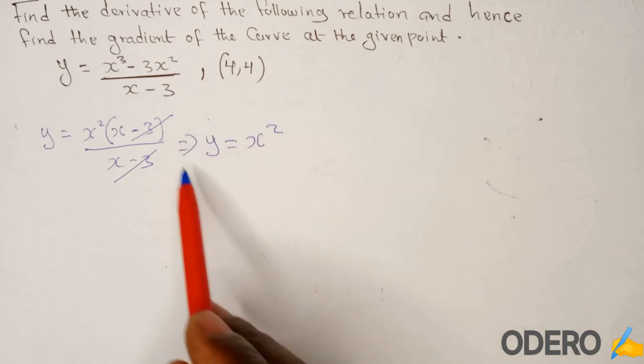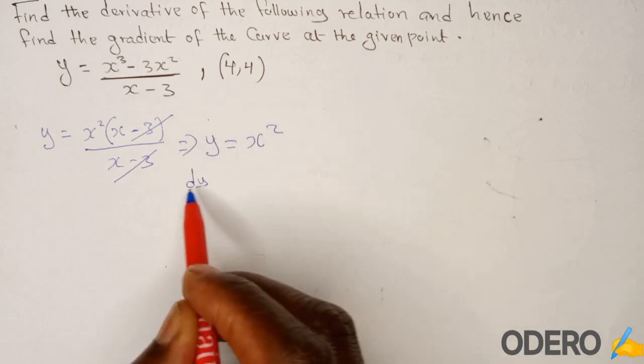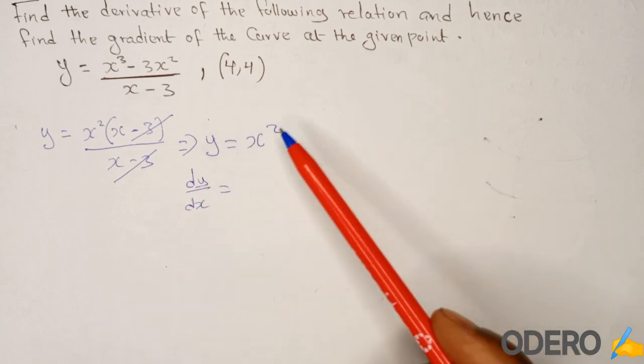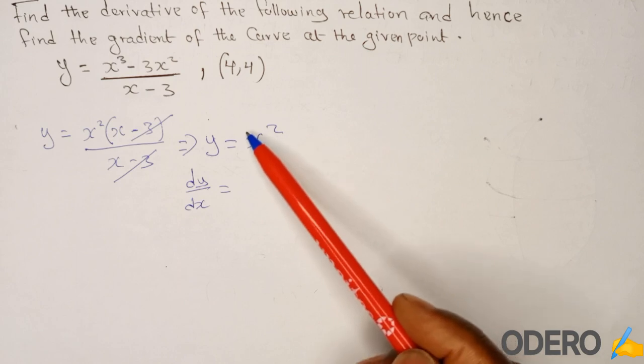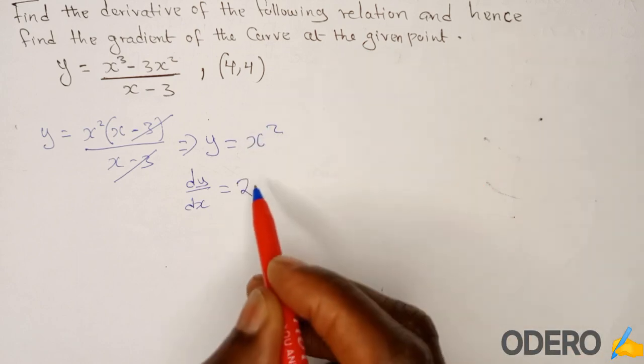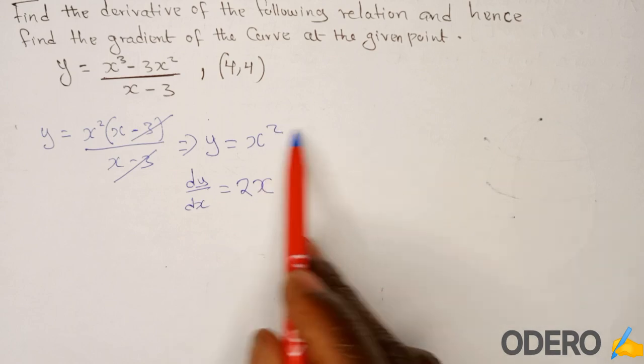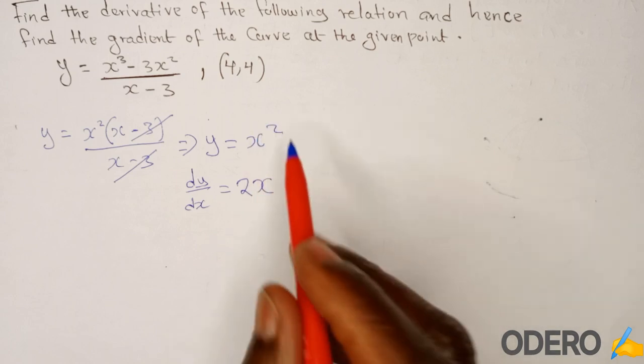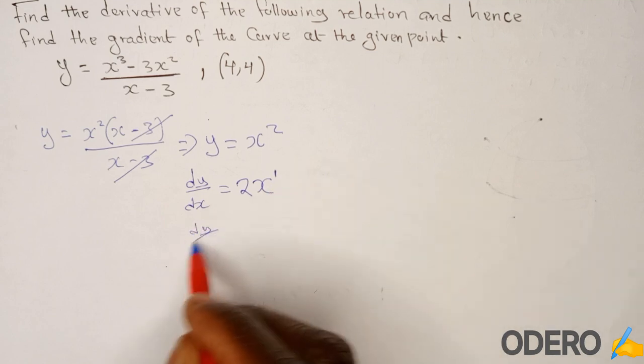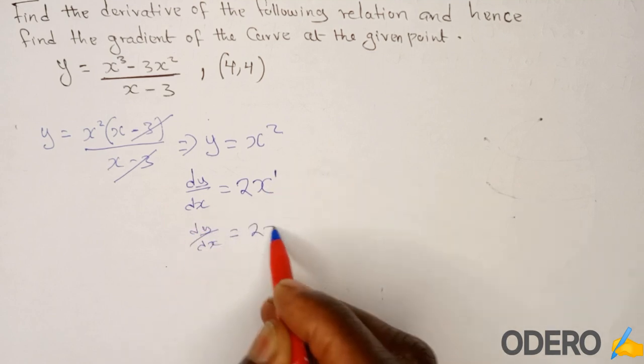Then now we can differentiate this one. So when you differentiate you get dy/dx. How do you differentiate this power? You multiply by whatever is in front of x—it is 1—so you're going to have 2 here. Then x, then you less 1 to this power. So 2 minus 1 is 1.